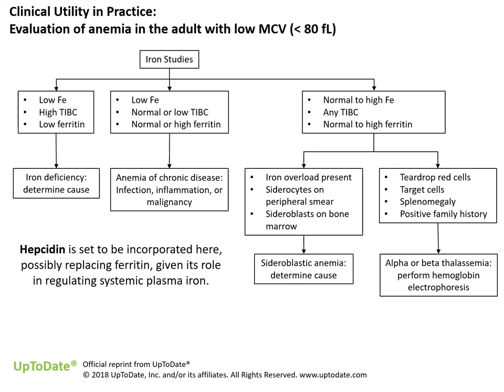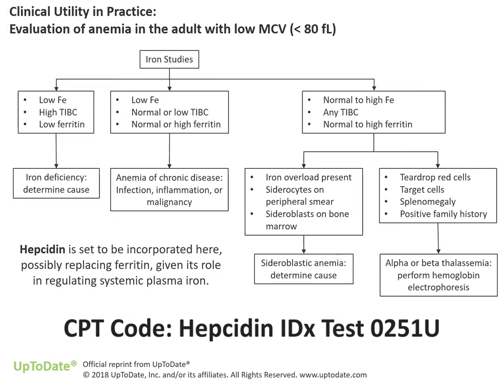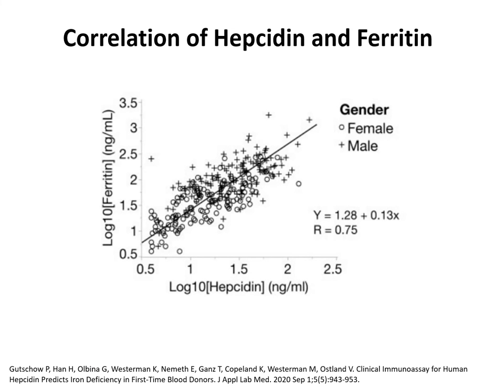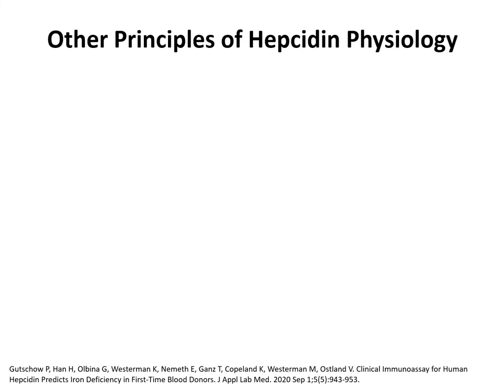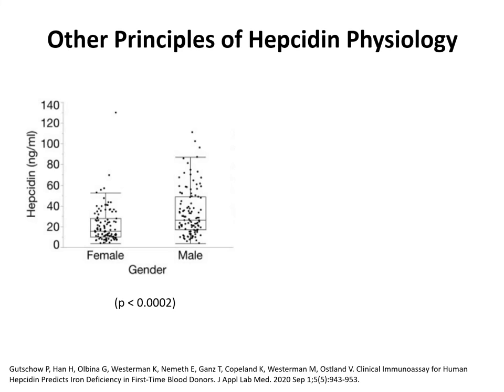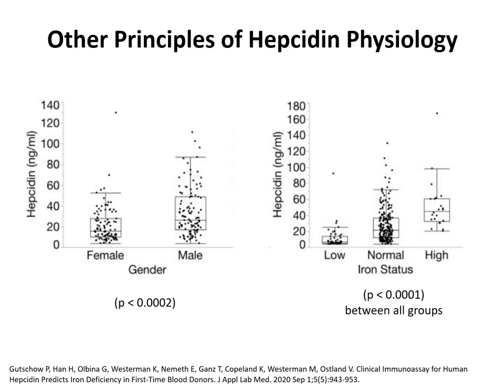The intrinsic hepcidin diagnostic has also been issued a CPT code for Medicare reimbursement. Hepcidin can replace the basic indication granted by ferritin due to the high degree of correlation between them. In healthy donors, hepcidin levels are higher in men than in women. Hepcidin can stratify patients by iron status: when hepcidin is low, patient iron status is low; as hepcidin increases, so does iron status.